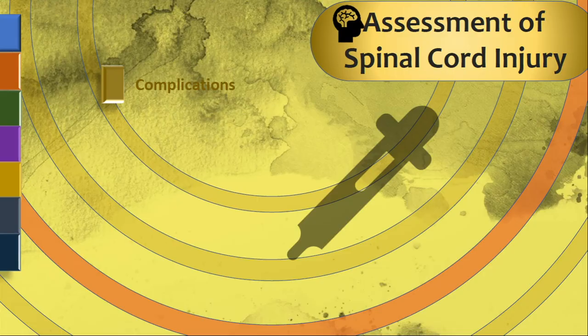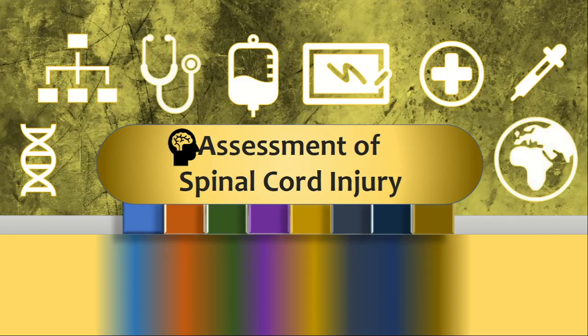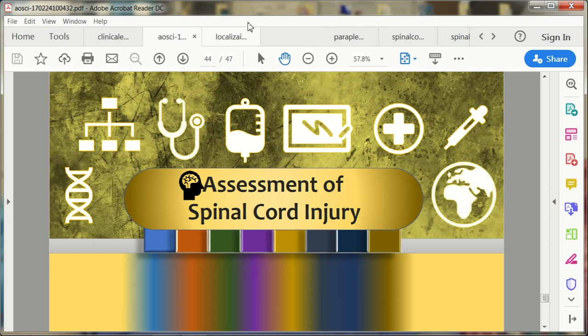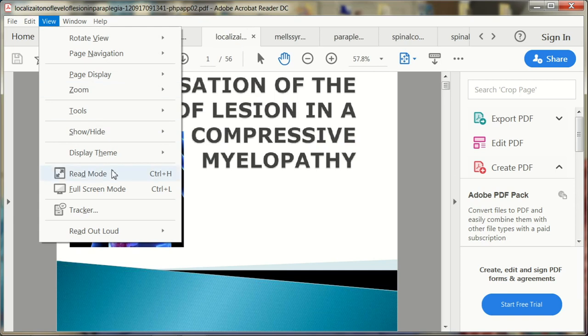Complications of spinal cord injury include pain, spasticity, dysreflexia — especially above T6 level — neurological deterioration, thromboembolic events, osteoporosis, heterotopic ossification, and contractures. This completes the brief assessment of spinal cord injury. We now move to localizing the level of injury.